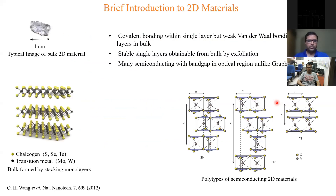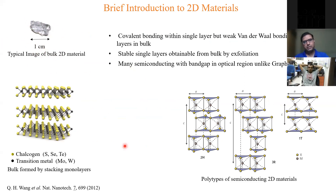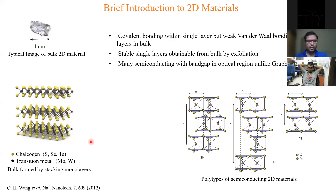When we see 2D materials in the lab they typically come in the form of shiny crystals. We take one of these crystals and use the scotch tape technique to exfoliate it into individual layers or multiple layers. The atomic structure has very strong covalent bonding in-plane within a typical layer, while the bonding between layers is of van der Waals nature and is weak. This makes it easy to exfoliate single or multiple layers onto different substrates.